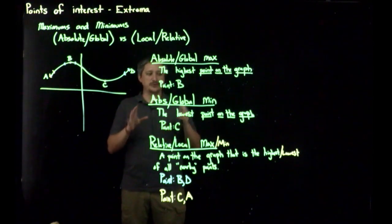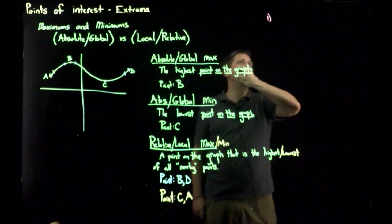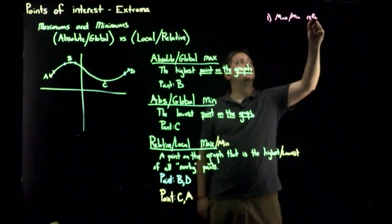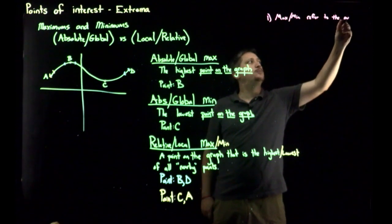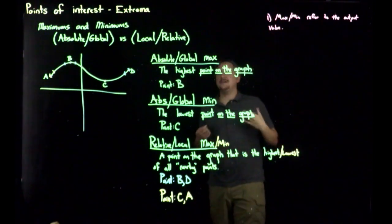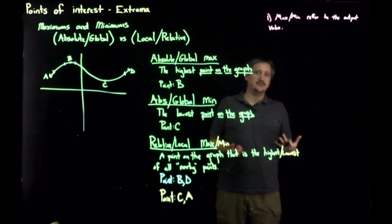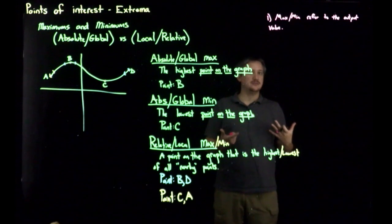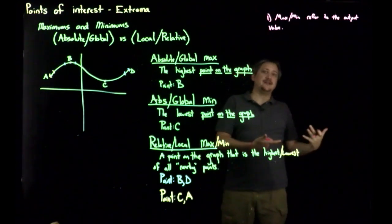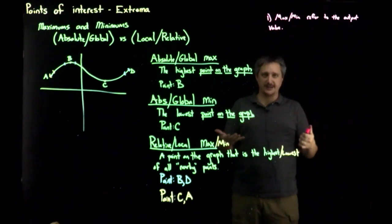Now, the thing to keep in mind, there's a couple of things about language that are important here. The max or min refer to the output value. So if I ask, what is the absolute maximum, I expect a number back, 17. If I ask, where is the absolute maximum, that would be an x value, or even a point, depending on the context of the question. So max min itself, if I say, what is the max, that's referring to just the value. But I could also ask, where is it? And that would refer to the point or possibly the x value, depending on the exact phrasing of the question, which should be clear in context if you look for it.